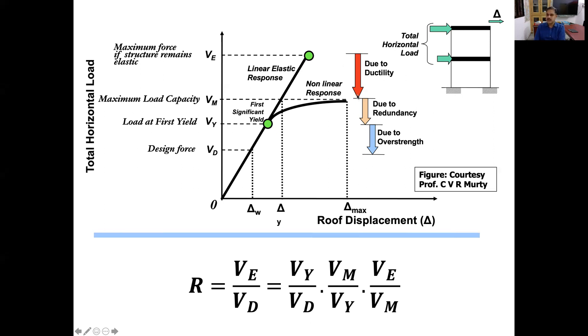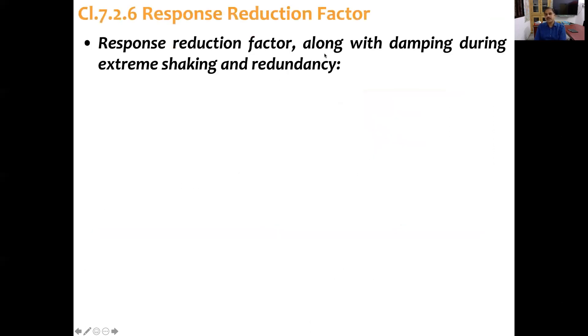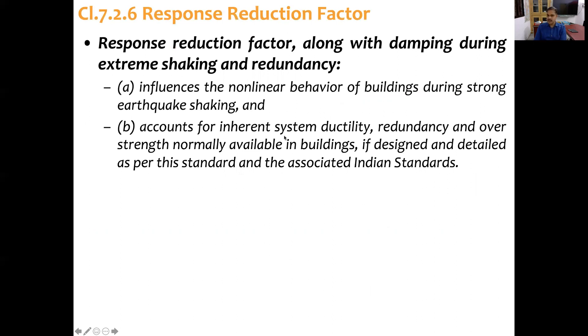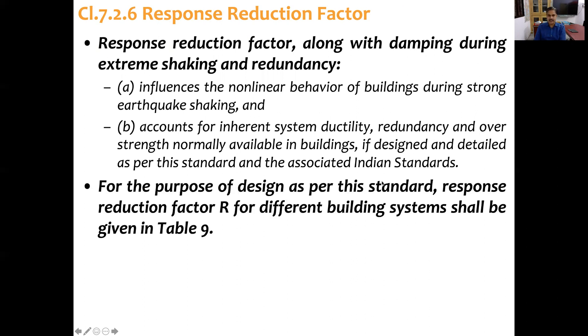You can see these three drops. The first drop is because of the ductility, second one because of redundancy, and the third one due to over-strength. Response reduction factor, along with the damping during extreme shaking and redundancy, influences the non-linear behavior of buildings during strong earthquake shaking and accounts for inherent system ductility, redundancy, and over-strength normally available in buildings if designed and detailed as per this standard.